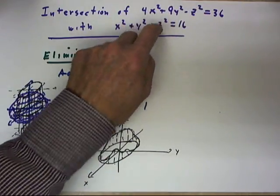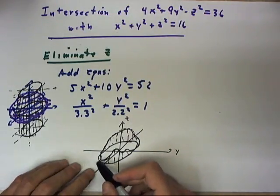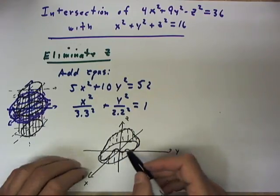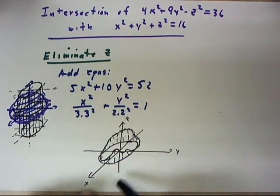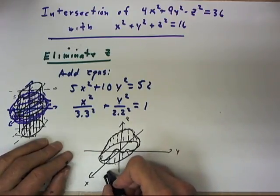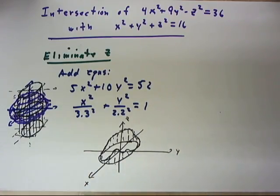But by eliminating z between the two equations, we find a locus of points in the XY plane, and the intersection lies above, and there will also be a symmetric intersection below the XY plane.